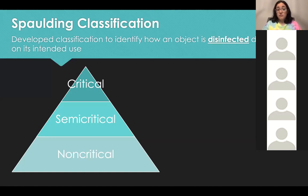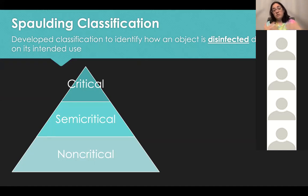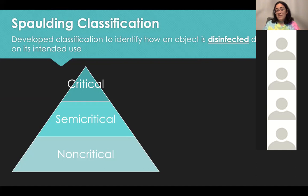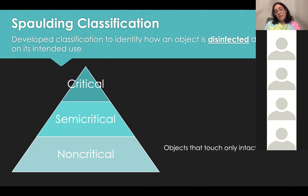One of the key things to know when it comes to sterilization is the Spaulding classification. Spaulding classification is really important for your CIC exam — you need to be able to think about instruments and devices and automatically categorize them: non-critical, semi-critical, or critical. A non-critical device touches only intact skin — a blood pressure cuff is a perfect example. What about a semi-critical device? What would the definition be, or an example?